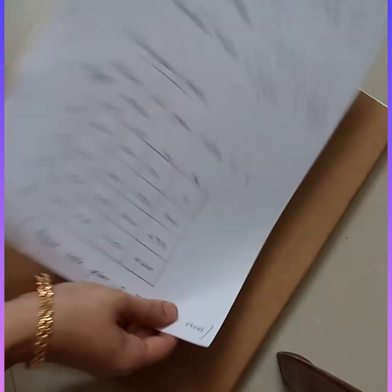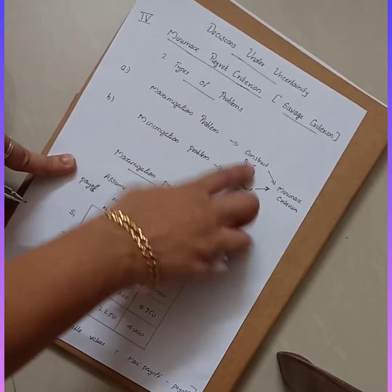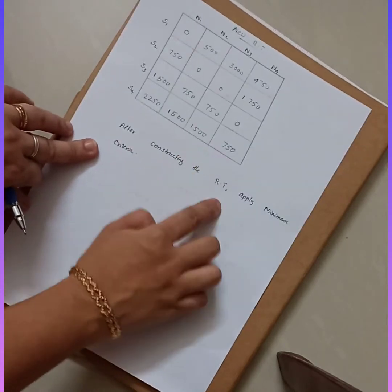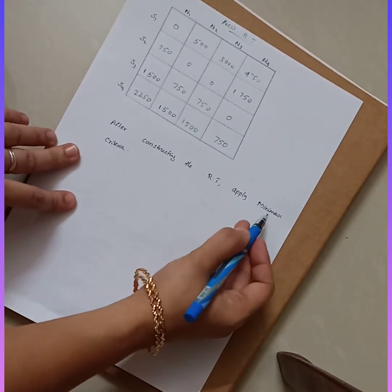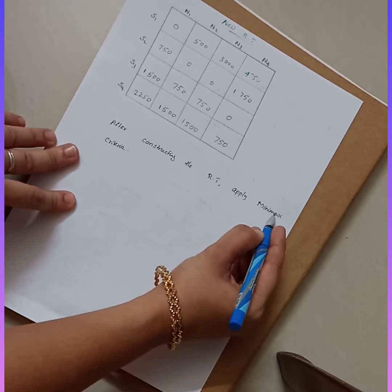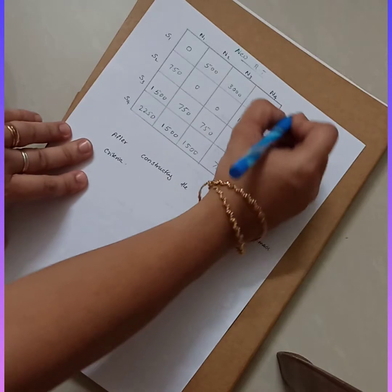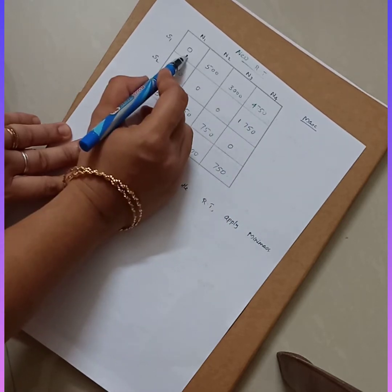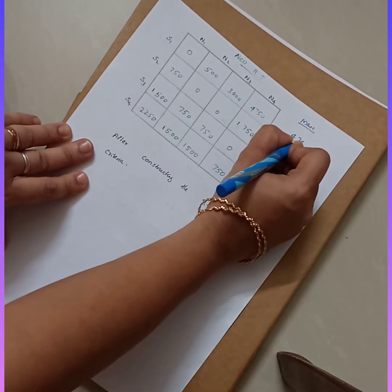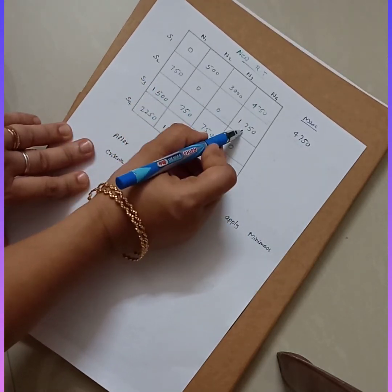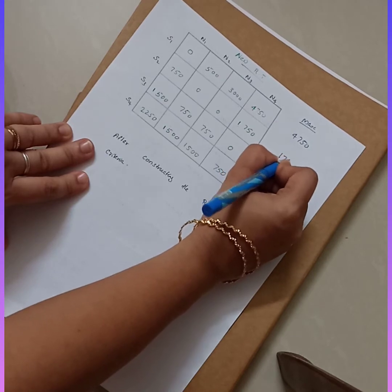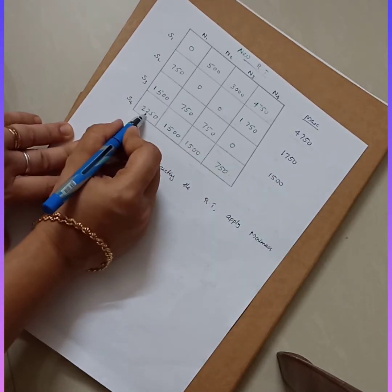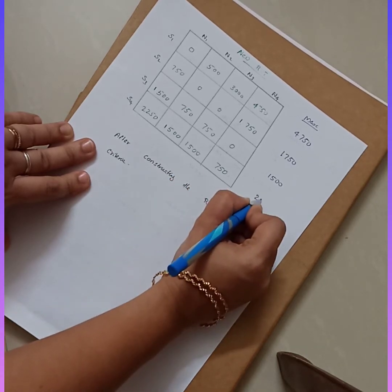The second step is to apply the minimax criterion to the regret table. In minimax criterion, first find the maximum value in each row, then take the minimum out of those maximum values. For S1 the maximum is 4750; for S2 it is 1750; for S3 it is 1500; for S4 it is 2250.